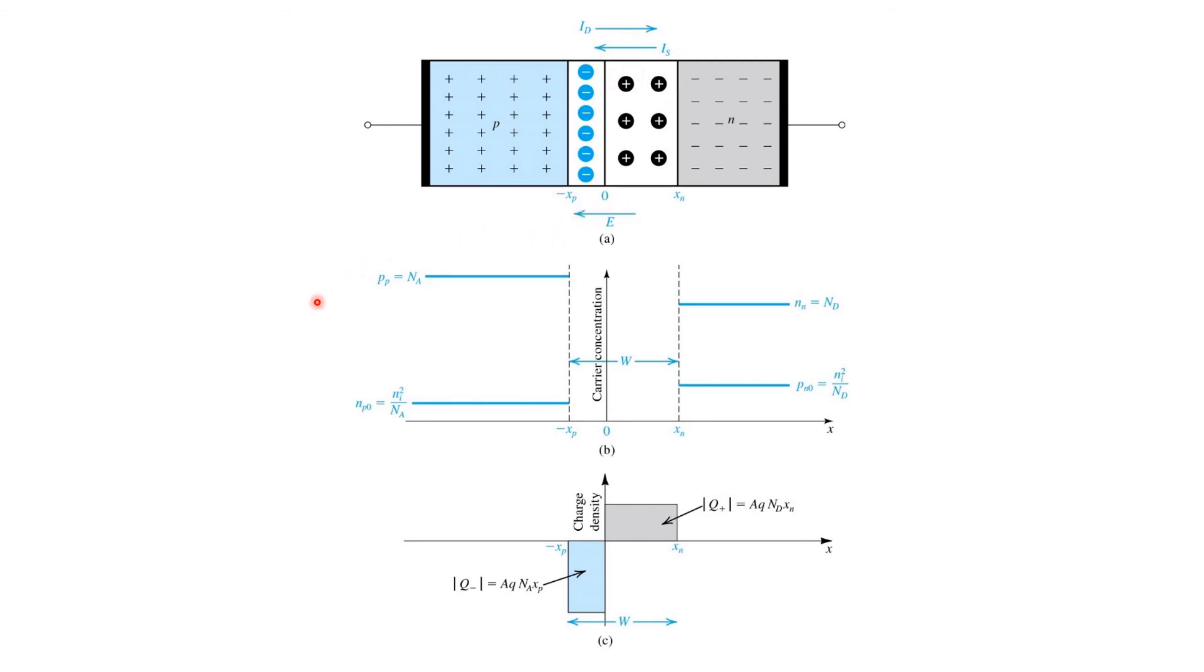If we plot carrier concentrations versus position X through the P-N junction, we see a plot something like this. On the left side, we have a P-type region. So, the hole concentration in the P-type region is very high, while the electron concentration is much lower. Remember that we call holes in the P-type region the majority carrier. And therefore, P sub P is the majority carrier concentration in the P-type region. Whereas, the concentration of electrons in the P-type region is the minority carrier concentration. And it's determined by this expression, which we've seen before.